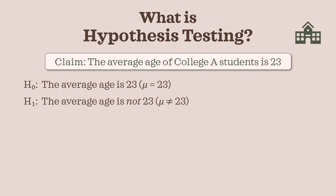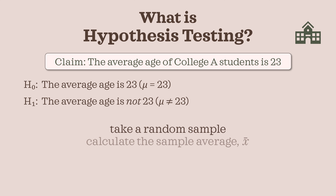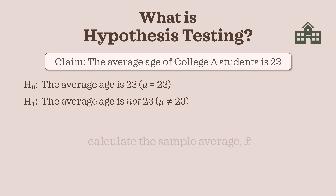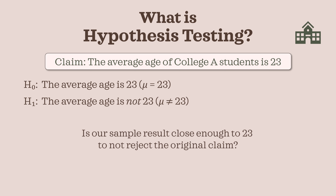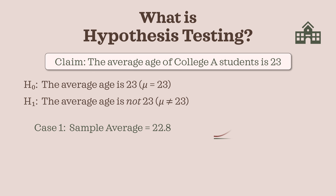Now, we don't have access to every student at the college, so we take a random sample — say 50 students — and calculate their sample average age. This sample average is our evidence. We then ask the crucial question: is the sample result close enough to 23 for us not to reject the original claim? Suppose the sample average is 22.8. That's pretty close to 23 — it could easily be due to random chance.